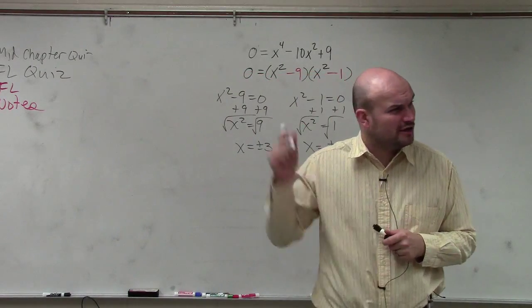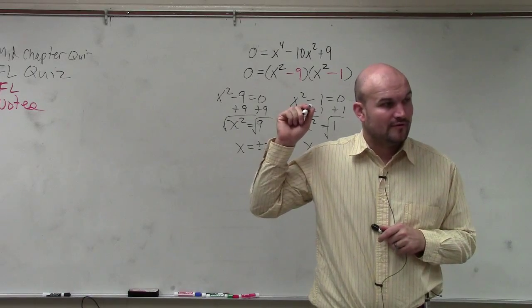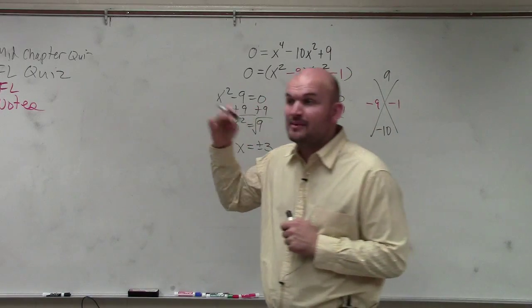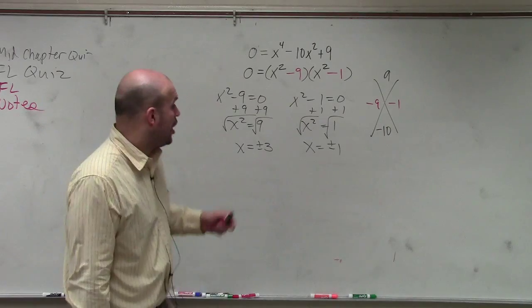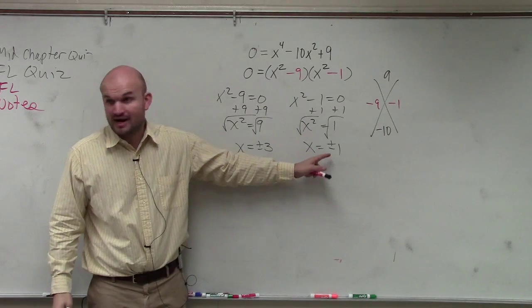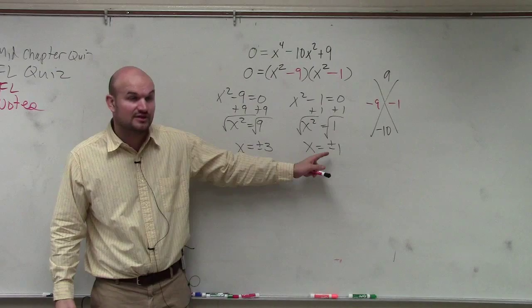Now, does that make sense? What is the degree of that polynomial we're solving? 4, right? So how many solutions should we have? 4. All of our solutions are real. There is no i in these problems. Or in this one.